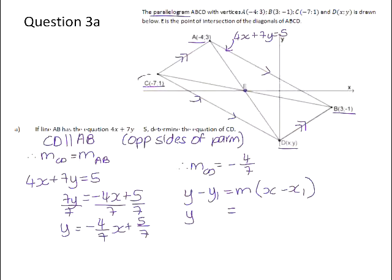So we need to substitute in the coordinates of a point that lie on the line. So the Y value at C is 1. The gradient, we've already said, is negative 4 over 7. And the X value of C is negative 7.